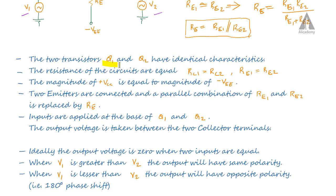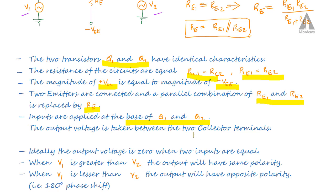Since transistors Q1 and Q2 are identical, the characteristics are identical, so RC1 equals RC2, and RE1 equals RE2. The magnitude of VCC equals the magnitude of VEE. The emitter terminals are connected, and the parallel combination of RE1 and RE2 is replaced by RE. Inputs are applied at the bases of Q1 and Q2, and the output voltage is taken between the two collector terminals — this is called dual input balanced output.